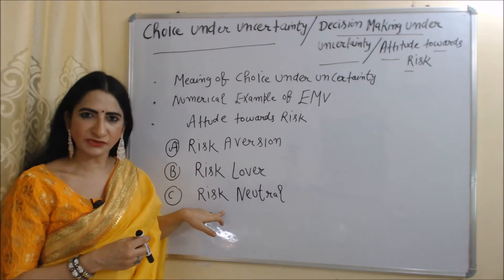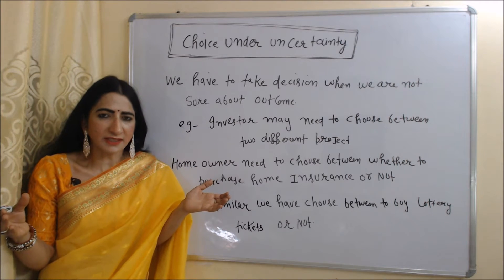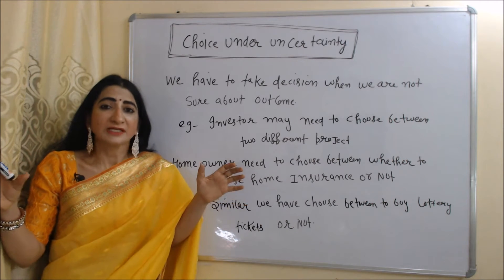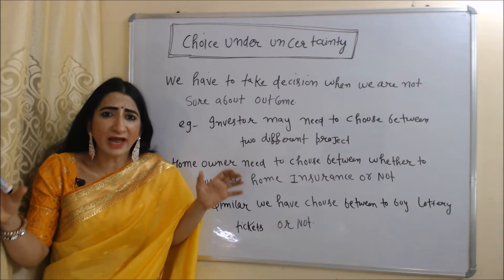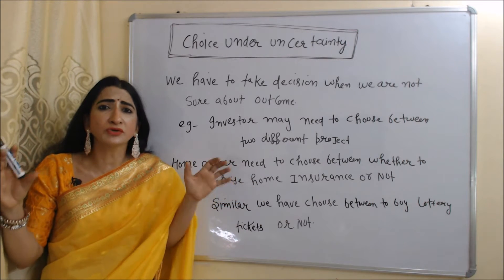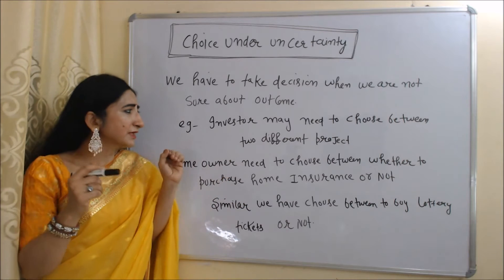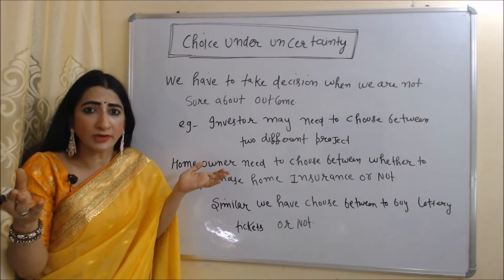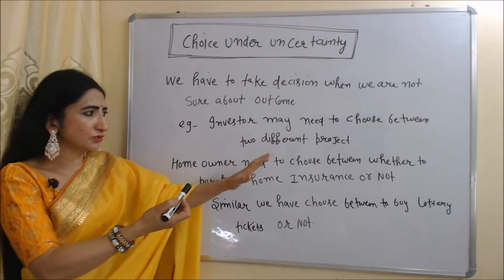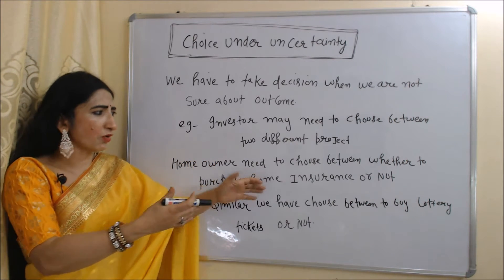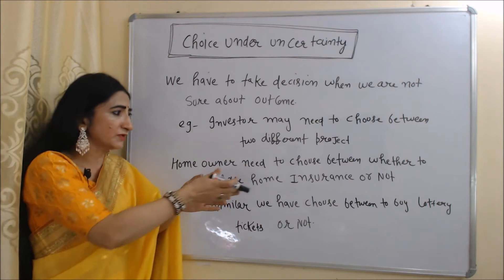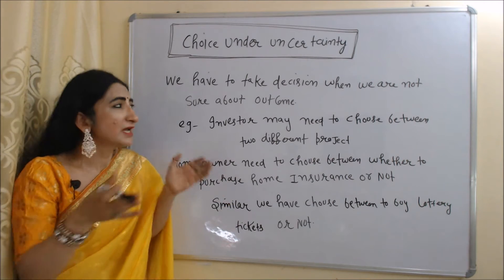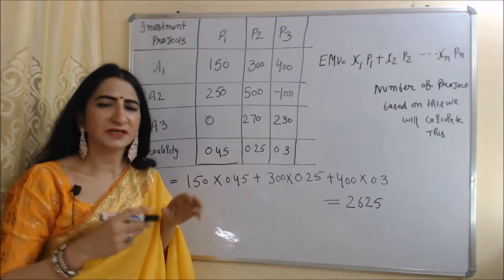Choice under uncertainty means we have to make a decision when we are not sure about the outcome. For example, an investor may need to choose between two different projects because he is not sure about the outcome. Similarly, a homeowner needs to choose whether to purchase home insurance or not. You also have to choose whether to buy a lottery ticket or not — because you are not sure about the outcome, it is called choice under uncertainty.